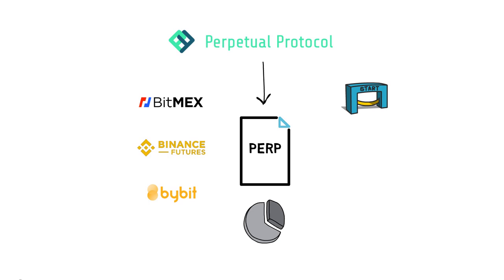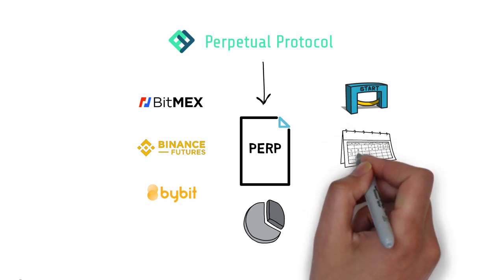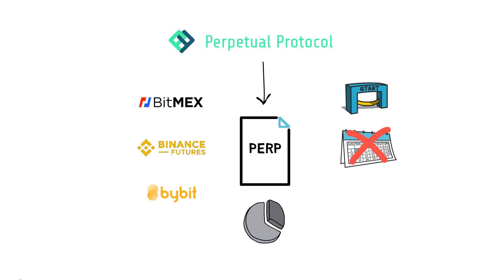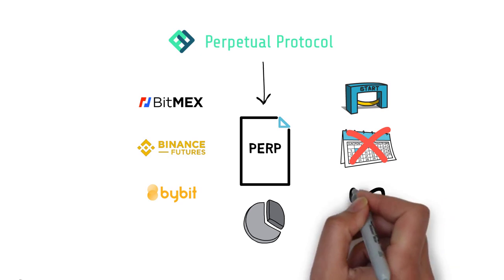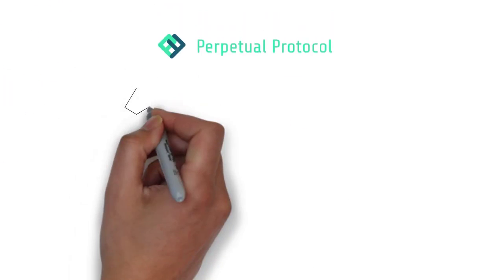It's a derivative financial contract with no expiration or settlement date. Hence, it can be held and traded for an indefinite amount of time. Perpetual protocol, at the moment, allows for trading ETH, BTC, YFI, DOT and SNX.